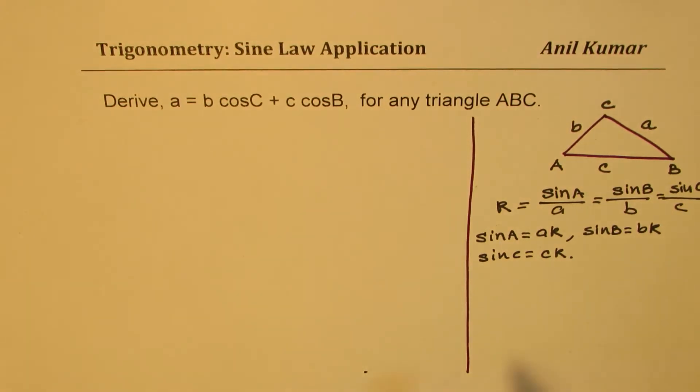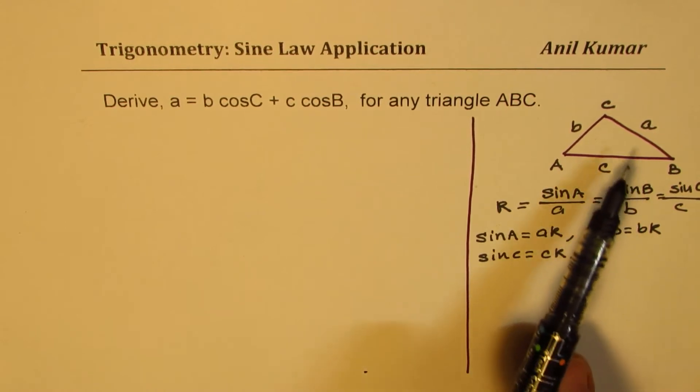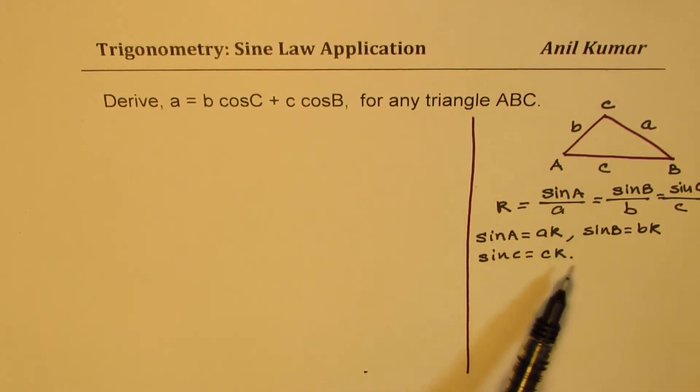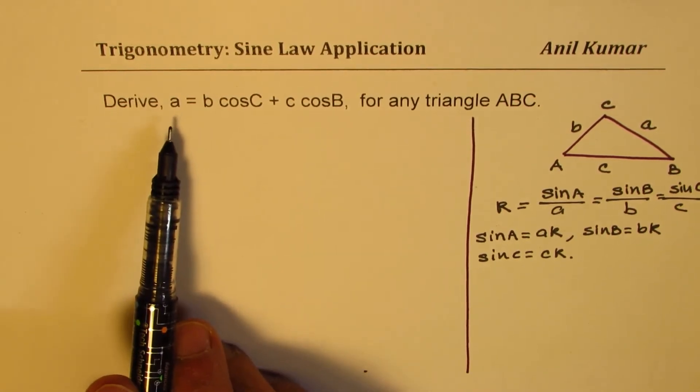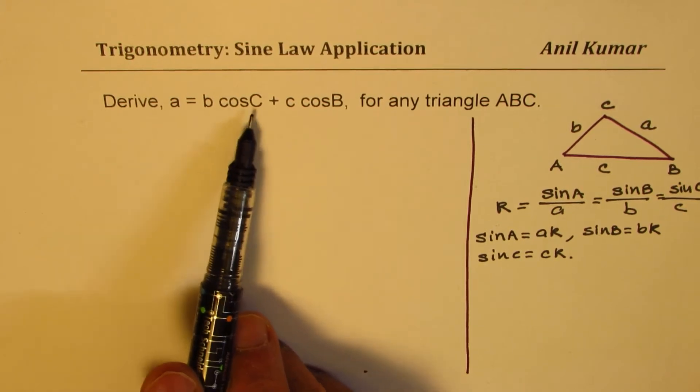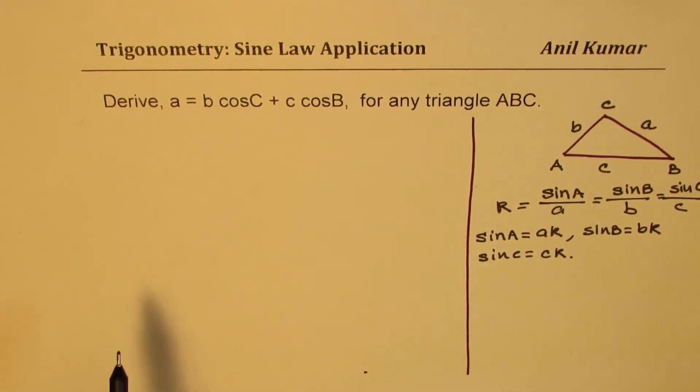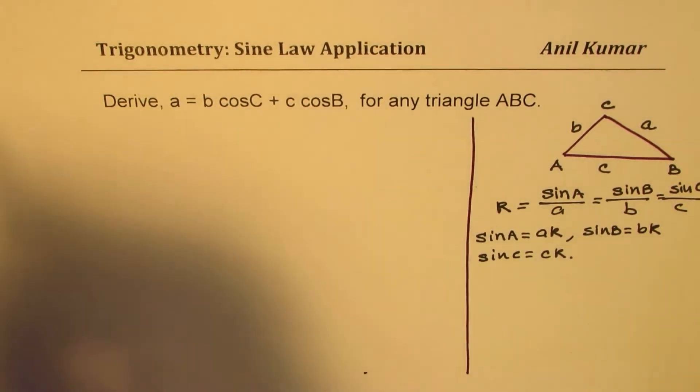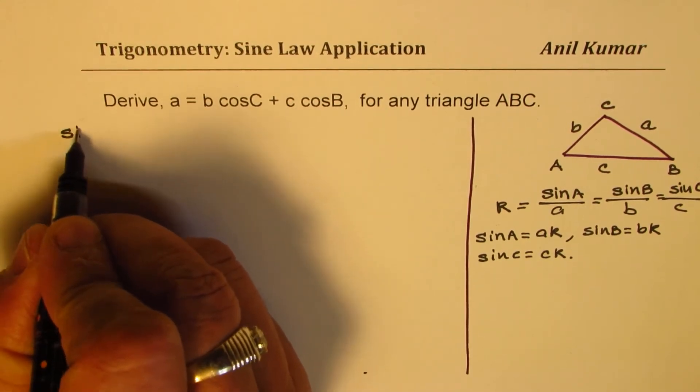We'll need to relate the angles with the sides using these relations. Now, let's get back to our equation. We need to prove A equals to B cos C plus C cos B. Well, that gives us an idea. We could actually start with what is sine of A.